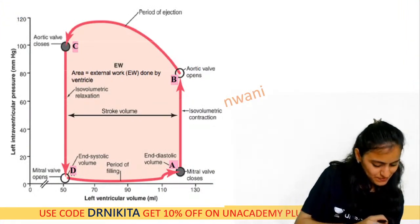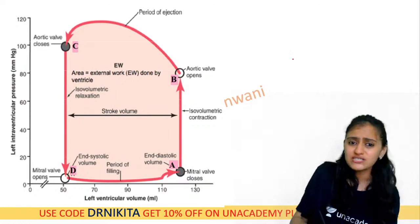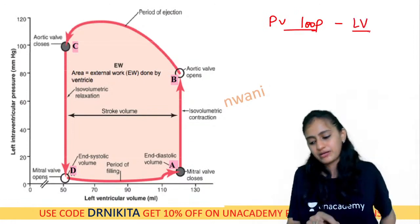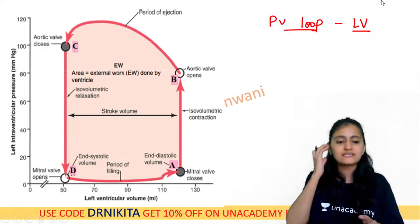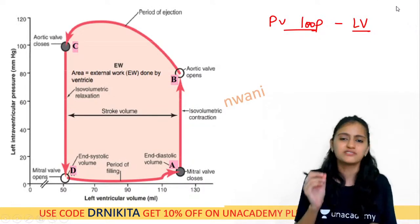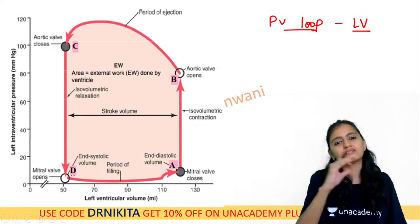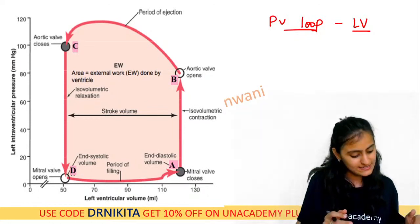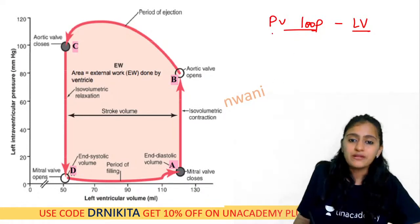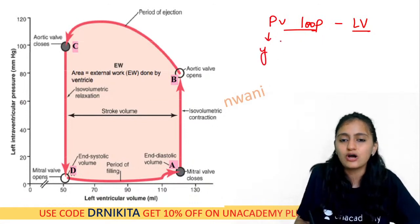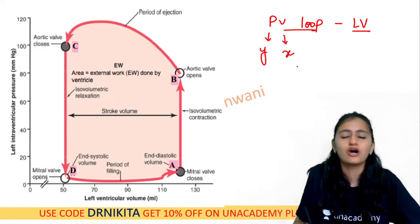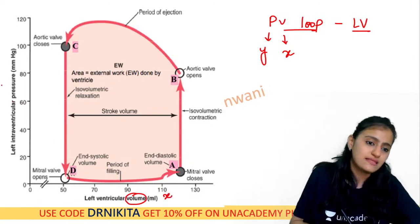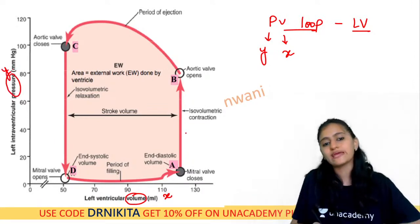Let's start with today's class on the pressure-volume loop for the left ventricle. The first basic thing to know: volume is along the x-axis and pressure is along the y-axis. So the left ventricular volume is on the x-axis and the left ventricular pressure is on the y-axis.